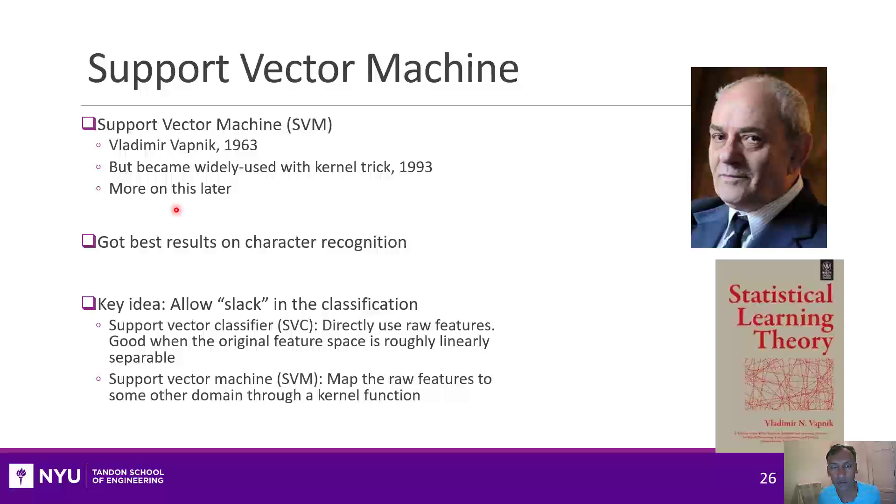The support vector machine was actually invented way back in 1963, almost 60 years old right now. It was developed by a very famous contributor to this field, Vladimir Vapnik, and this book in particular was very influential. Although it was really invented back in 63, it was really the kernel trick that happened a little bit later that made it become so widely used. We're going to talk about that kernel trick in the final section. And one of the first demonstrations of this method's success was actually in character recognition.